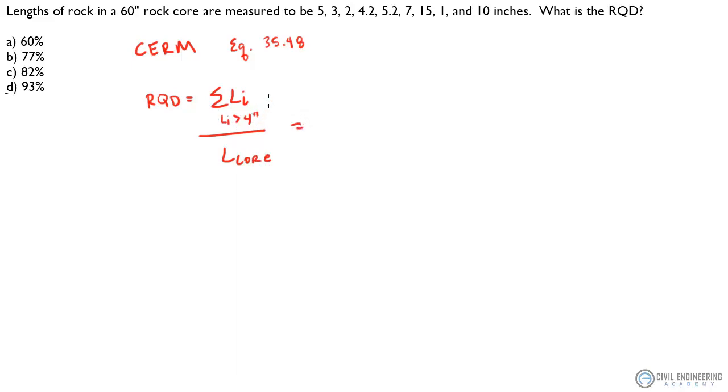So it's real simple, real simple question. So all we've got to do is add up the pieces greater than four, which looks like we've got five plus 4.2 plus 5.2 plus 7 plus 15. And don't forget this last guy over here plus 10 inches. And we divide this whole thing by the length of the core, which was 60 inches given in the problem. And we need to multiply that by 100% because we want it in percentages.